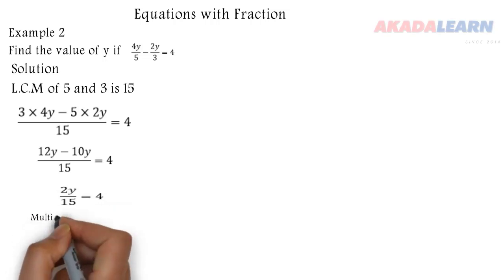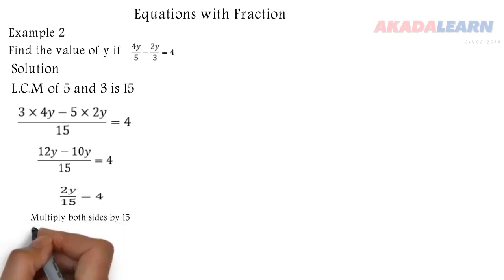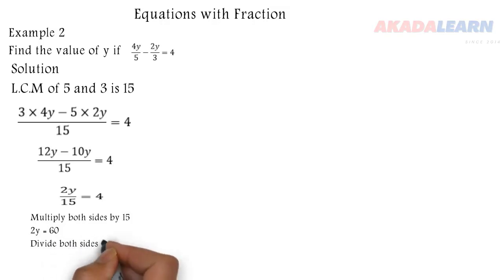To remove the fraction, we multiply both sides of 2y/15 = 4 by 15. When we do that, we get 2y = 60. To make y standalone, we divide both sides by 2 and our y is 30.